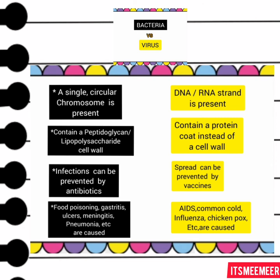Infections can be prevented by antibiotics in bacteria, while a virus spread can be prevented by vaccines. Food poisoning, gastritis, ulcers, meningitis, pneumonia, and many more are caused by bacteria. While AIDS, common cold, influenza, chickenpox, and many more are caused by a virus.